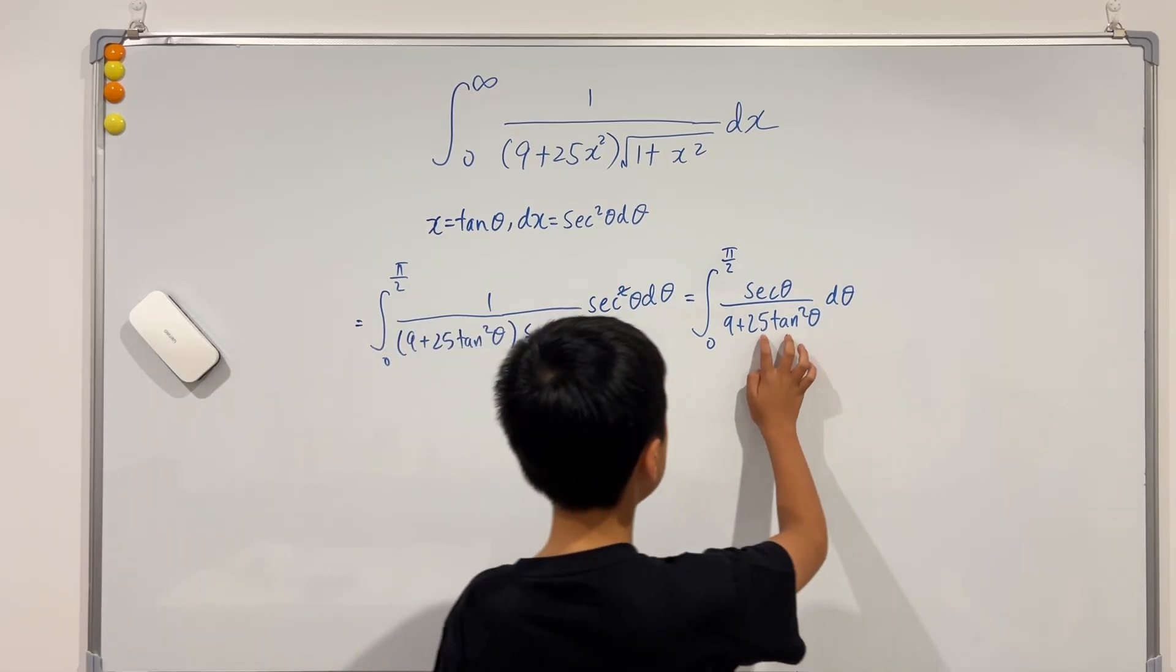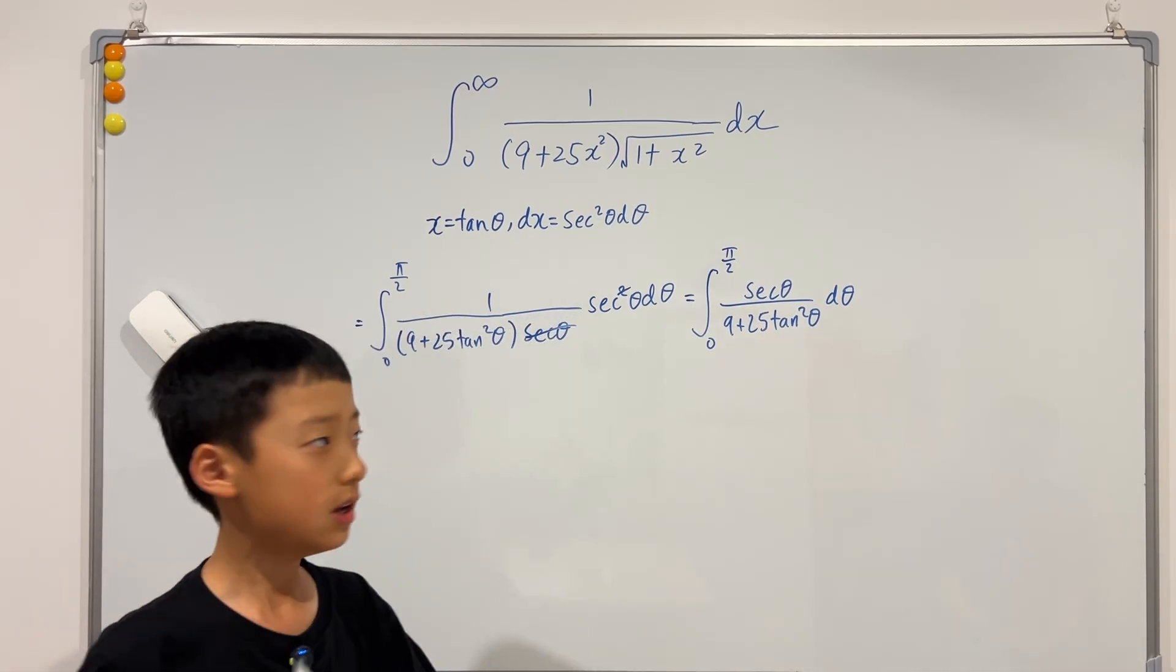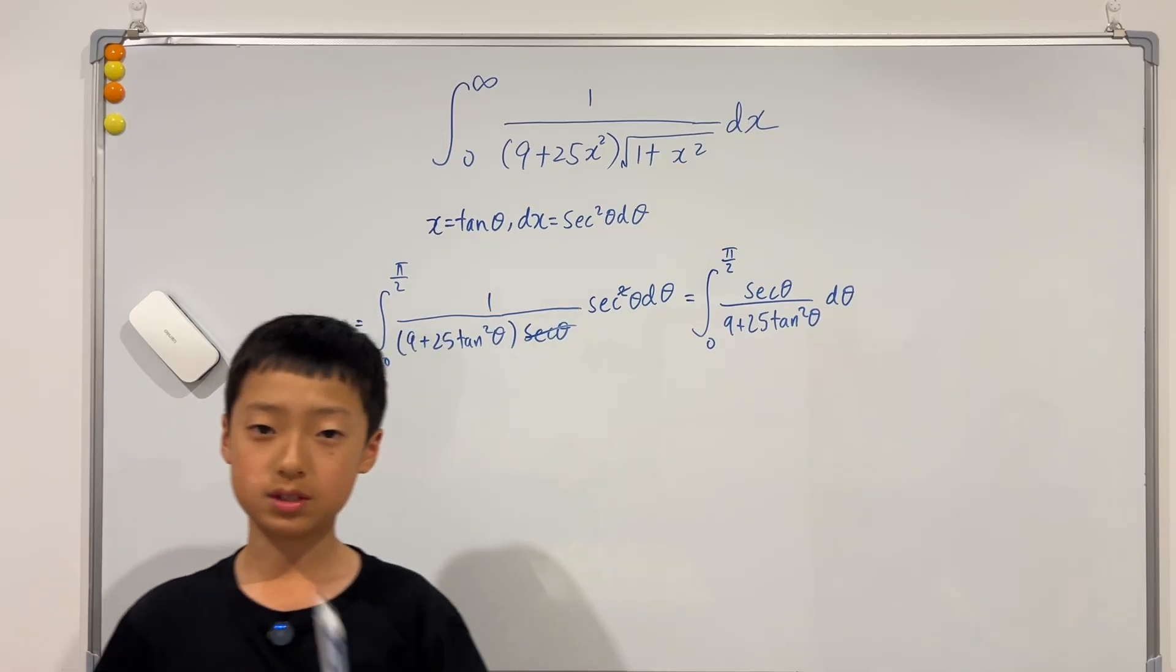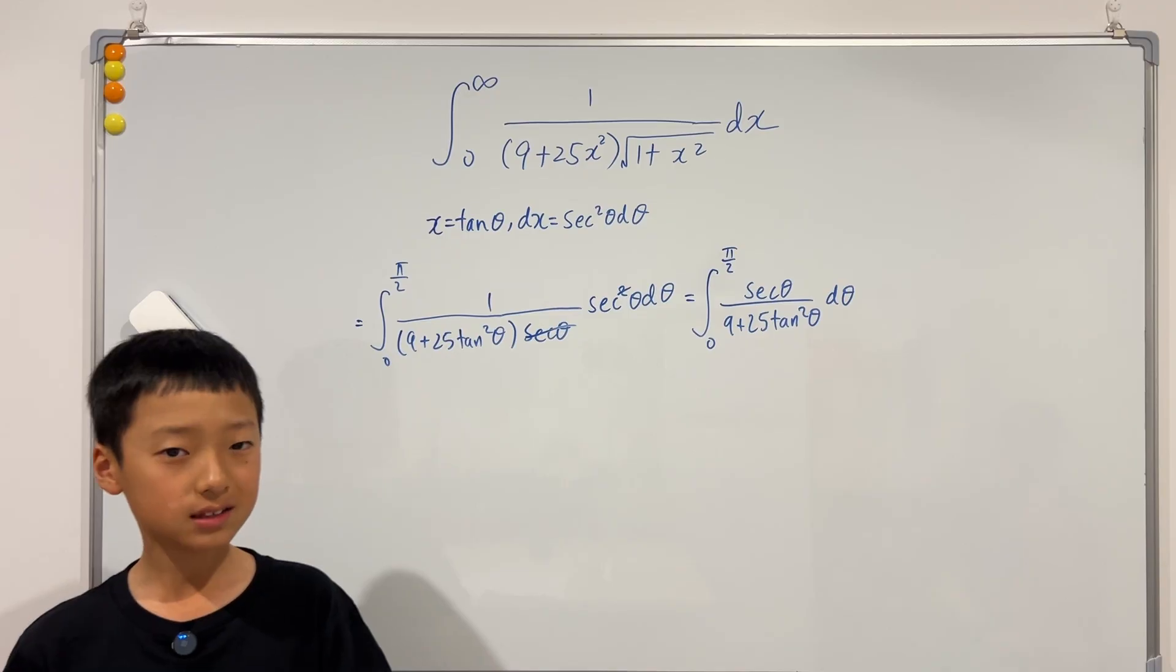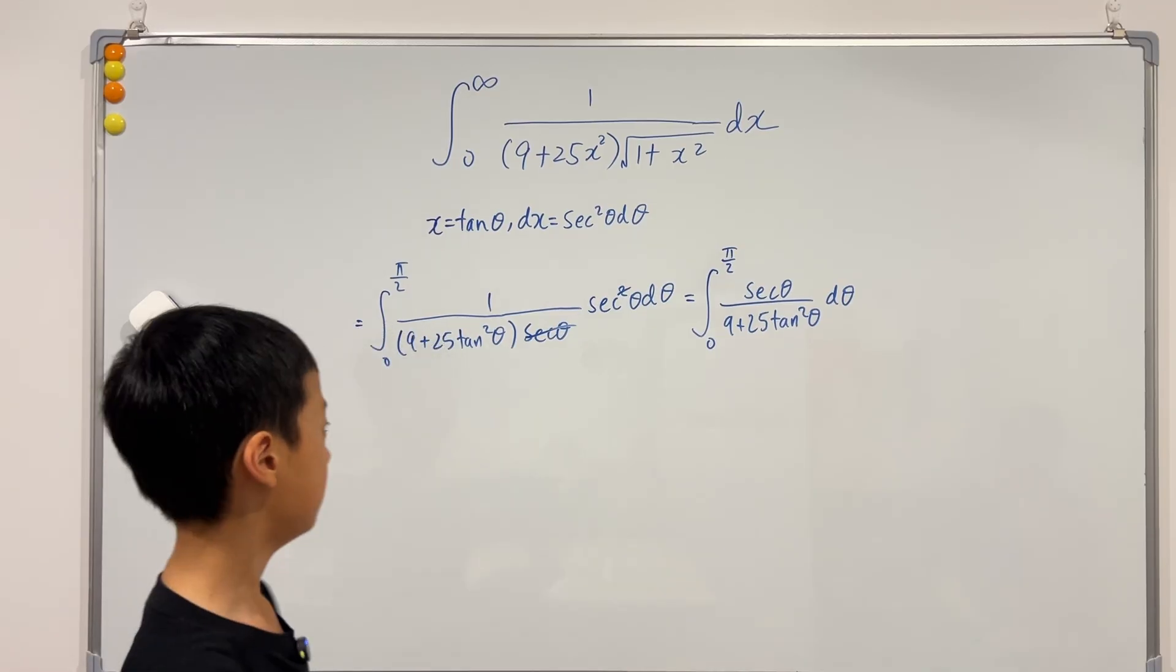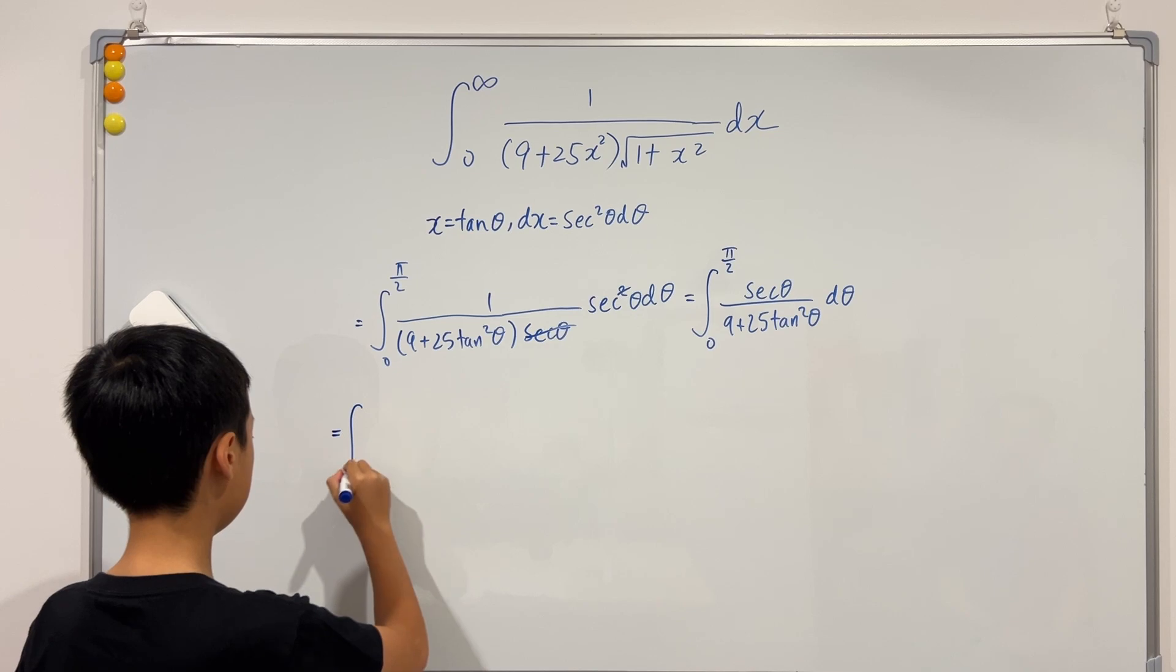So now I'm going to split up this 25 tangent squared into 9 tangent squared plus 16 tangent squared. Why? Because 9 plus 9 tangent squared is just 9 sec squared. So this is equal to...